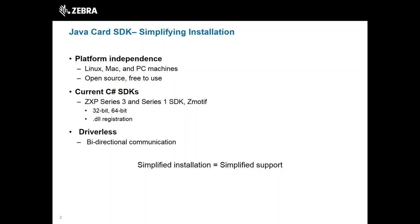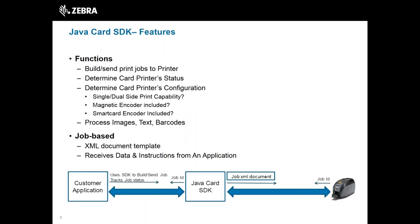Having less to worry about during installation is really nice. When providing support, there's less time spent figuring out what kind of setup you're running, whether your application is 32- or 64-bit. A simplified installation process means we can give simplified tech and development support. The SDK provides a lot of methodology similar to the C-Sharp SDKs, but it's more like the Z-Motif SDK in that it's job-based printing — the SDK receives instructions from an application and builds a job into an XML document.